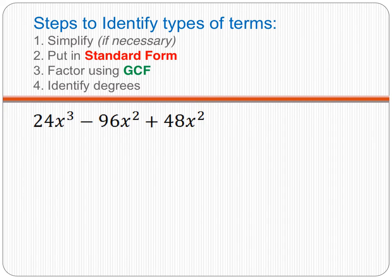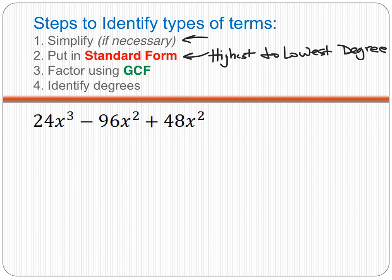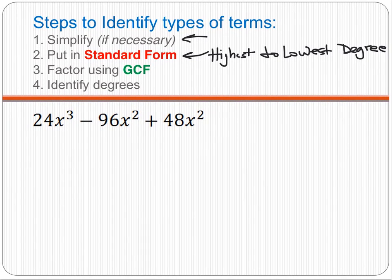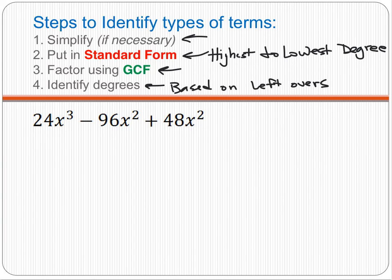Finally, here are the steps to identify linear and quadratic terms after factoring. First, check if anything can simplify. Second, put the polynomial in standard form — highest to lowest degree. Third, factor it using the greatest common factor. Then, based on the degrees left over inside the parentheses, we determine which is our linear term and which is our quadratic term.